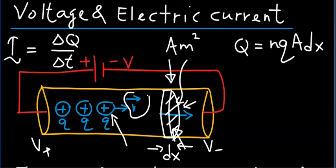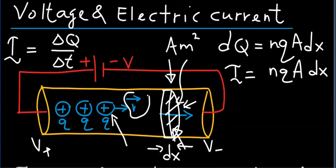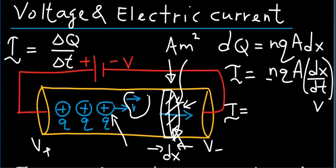We can write delta Q as differential dQ in the language of calculus, and the electric current can be expressed as I = nQ·A·dx/dt. But dx/dt is simply the drift speed, so in terms of these microscopic quantities — the number of carriers per unit volume and drift speed — the current quite simply becomes I = nQAv.